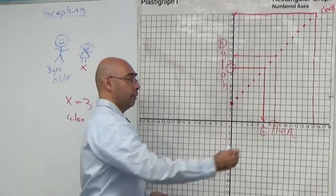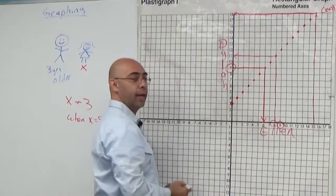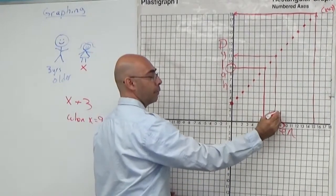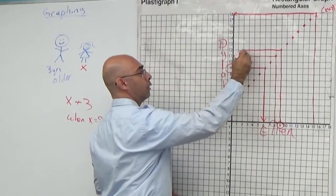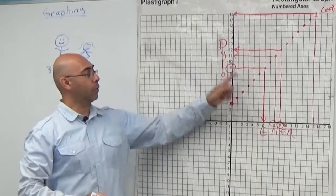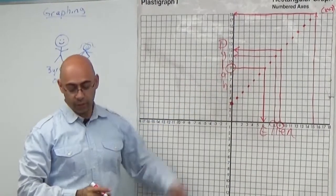So when X is nine, there's X equal to nine. I go up. Boom. Then I move over. So it's 12. So when Ellen is nine, Dylan is 12.